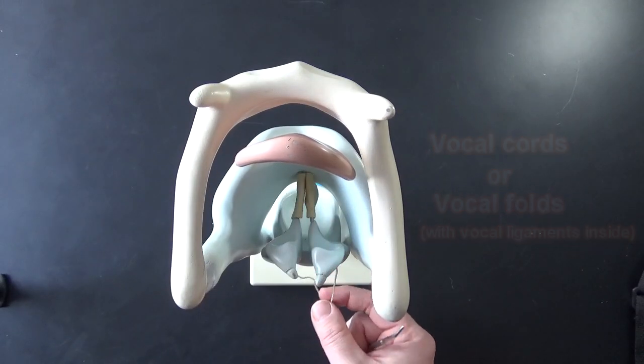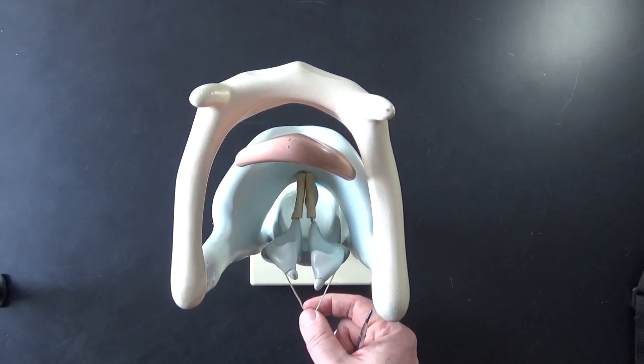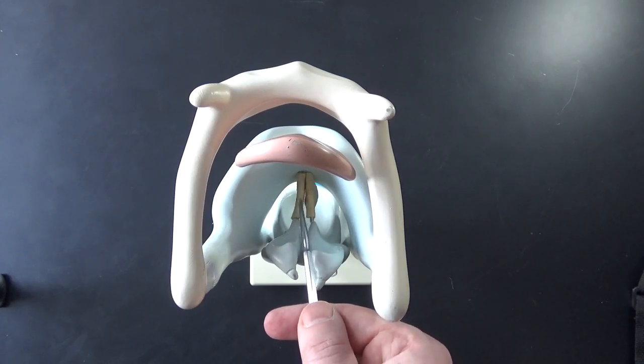Now if we were to pull on the string right here we would be able to move the arytenoid cartilages and we've got muscles that do that for us. But we would be able to move the arytenoid cartilages and you can see how they would act to open and close the vocal folds.